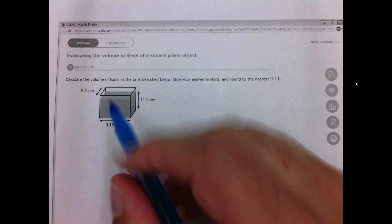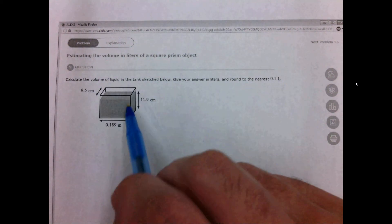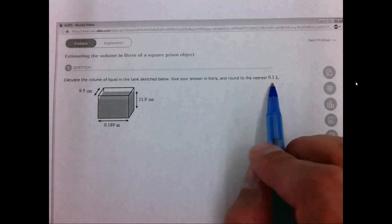In this question we're asked to calculate the volume of this tank to the nearest 0.1 liters, which happens to be the correct number of significant figures.